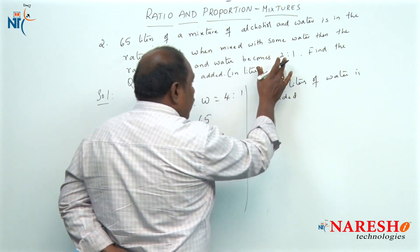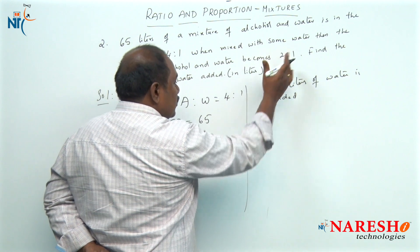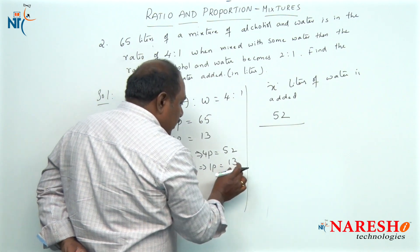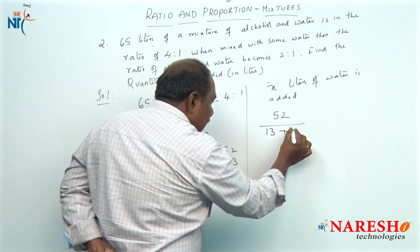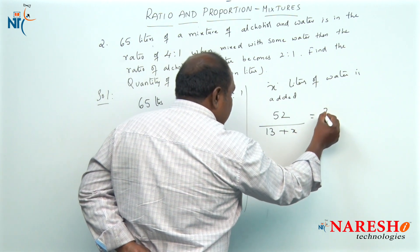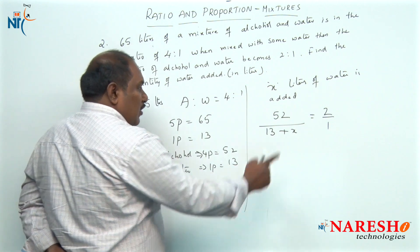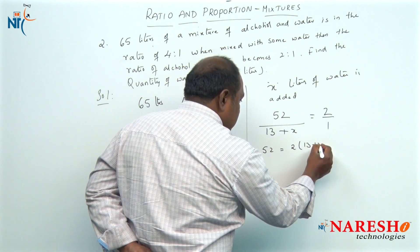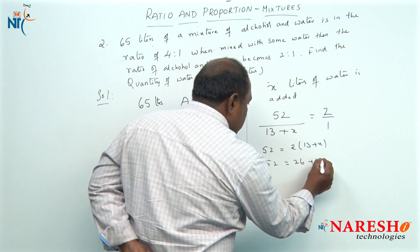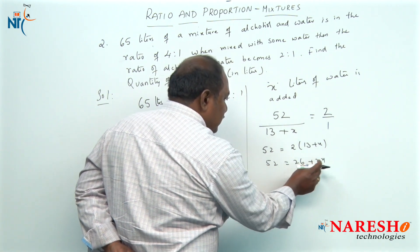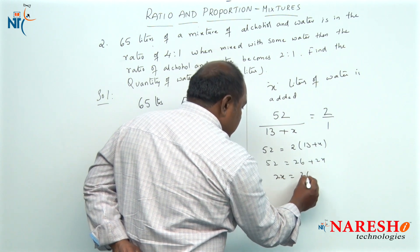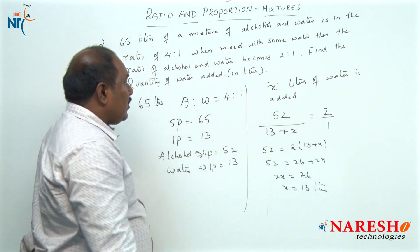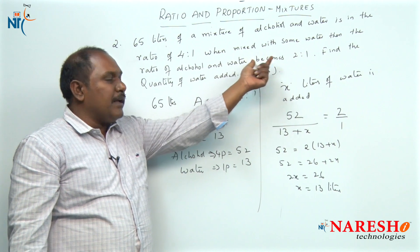If we add x liters of water, then the ratio of alcohol and water becomes 2 is to 1. The quantity of alcohol should remain the same: 52. To the 13 liters of water we are adding x liters of water, so that the resultant ratio is 2 is to 1. Cross multiply: 52 = 2 into (13 + x), so 52 = 26 + 2x, and 2x = 26, so x = 13. We have to add 13 liters of water so that the resultant ratio of alcohol and water becomes 2 is to 1.